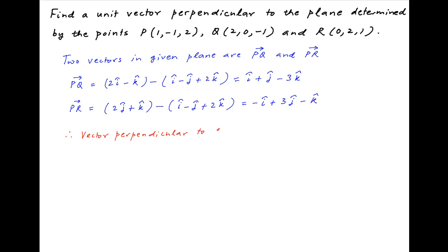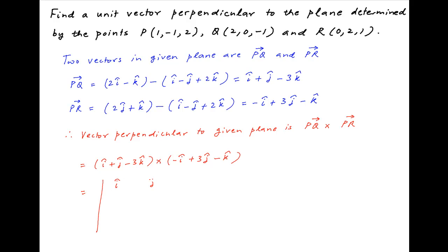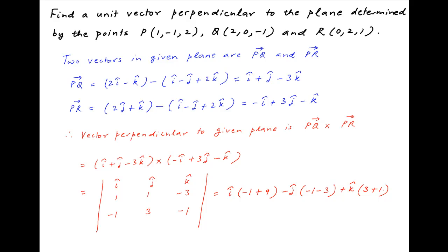Therefore, a vector perpendicular to the plane containing vectors PQ and PR is vector PQ cross vector PR. This equals (i plus j minus 3k) cross (minus i plus 3j minus k), expressed as a determinant with first row i, j, k; second row 1, 1, minus 3; and third row minus 1, 3, minus 1. This equals i times (minus 1 plus 9) minus j times (minus 1 minus 3) plus k times (3 plus 1), which simplifies to 8i plus 4j plus 4k.